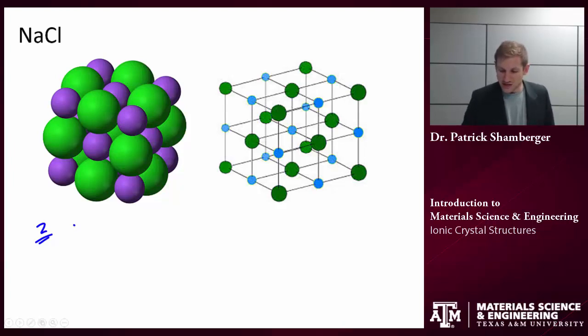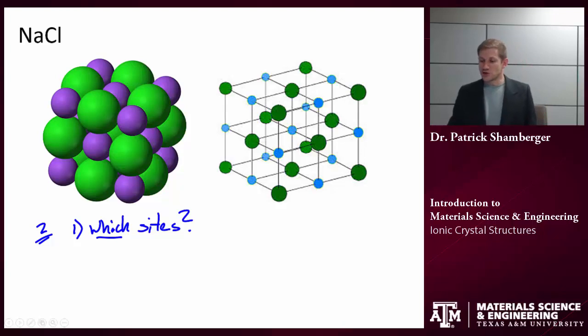The first question is which sites? What I mean is, ionic materials, we typically think of them as having an anionic lattice, so a lattice of anions, and cations are sitting in particular locations in that anionic lattice. Which locations are they sitting in?